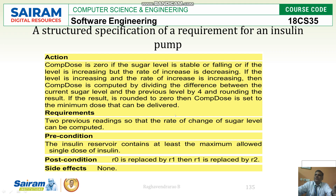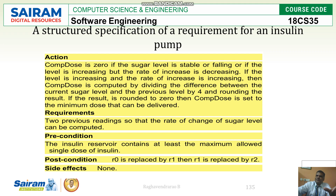It recommends the two previous readings for the rate of change of sugar levels for the computation. The pre-condition is that the insulin reservoir contains at least a maximum allowed single dose of insulin. At any critical moment, minimum 10 milligrams must be present as per the previous requirements. The post-condition is that based on the inputs, it replaces values — r0 with r1 and r1 with r2 — and calculations are done accordingly. Side effects: none.